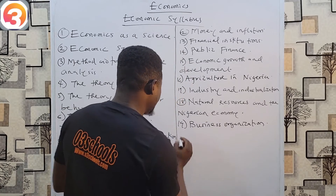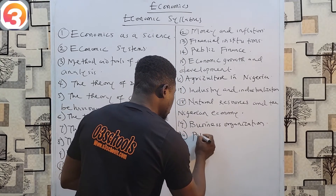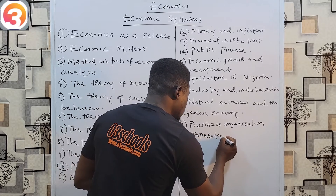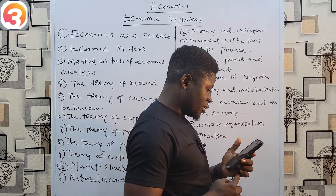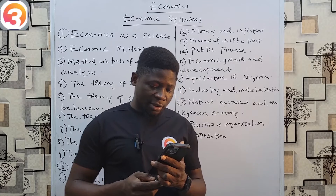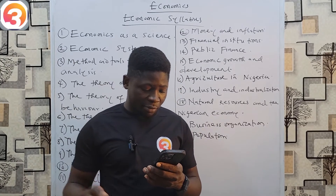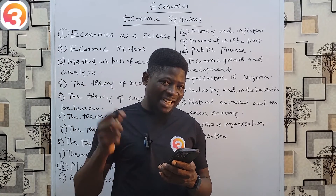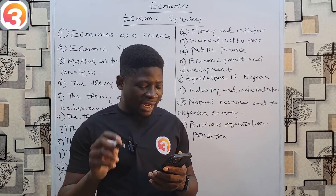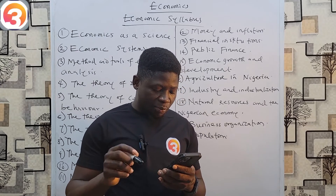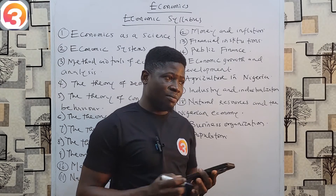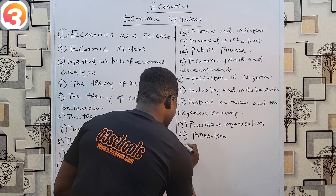Number twenty is Population. Under population, look at the meaning and theories of population, the census — its importance and problems — size and growth, structure and distribution, and population policy and economic development.